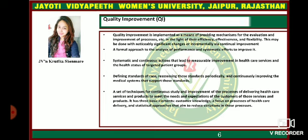Quality improvement is implemented as a means of providing a mechanism for the evaluation and improvement of processes in the light of efficiency, effectiveness, and flexibility. This may be done with significant changes or incrementally via continual improvement. It is a formal approach to the analysis of performance and systematic efforts to improve it — a systematic and continuous action that leads to measurable improvement in health care services and the food sector for target patient groups or consumers. It involves defining standards of care, reassessing those standards periodically, and continuously improving the systems that support those standards, with three basic elements: customer knowledge, a focus on processes of health care delivery, and statistical approaches that aim to reduce variations in those processes.